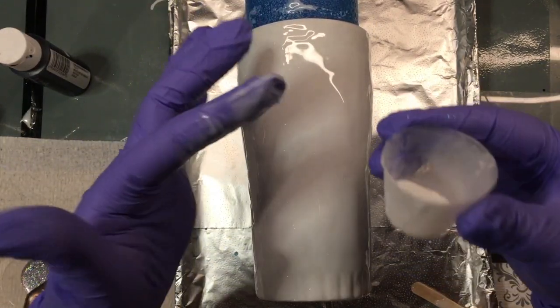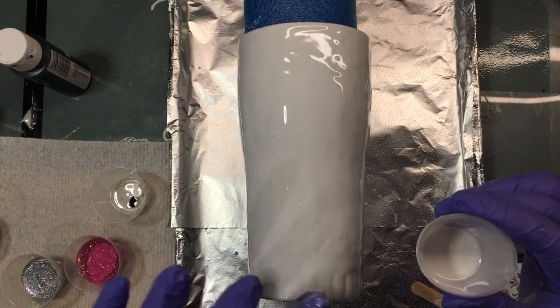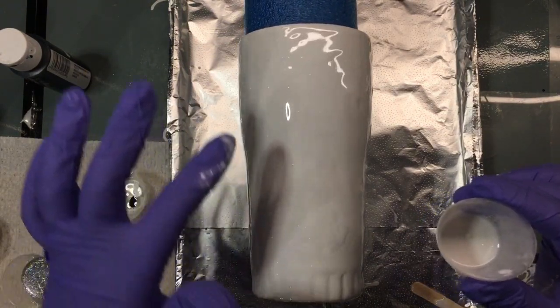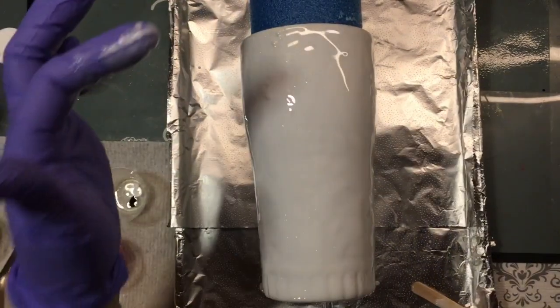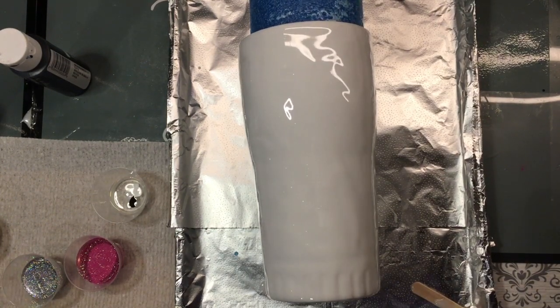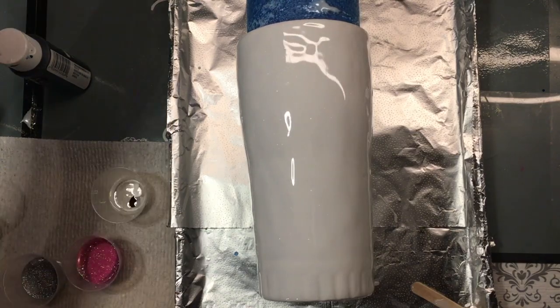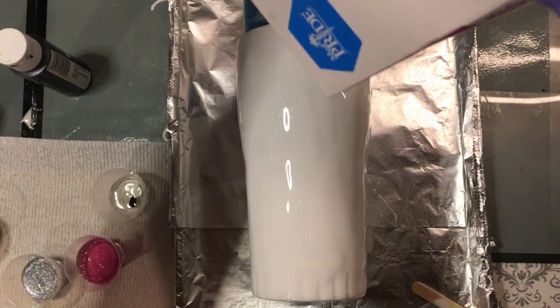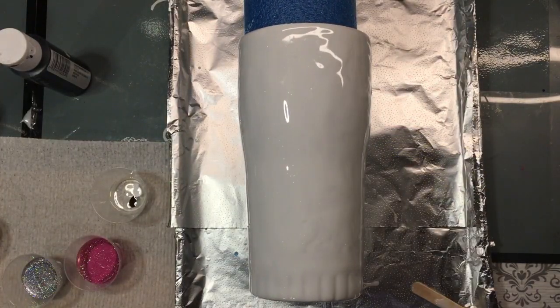My epoxy is a little slimy - that's because I added too much acrylic paint. That's what happens when you add too much paint. Next time I'll try to add a little less. I'm going to clean my finger.